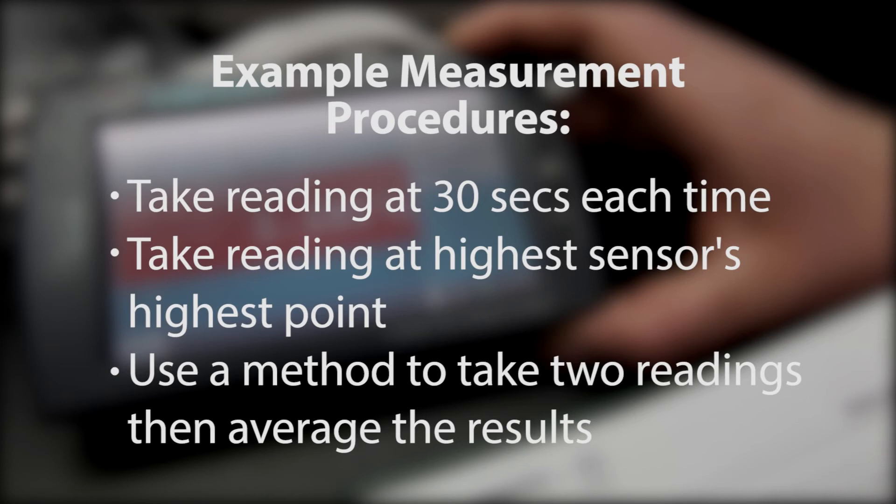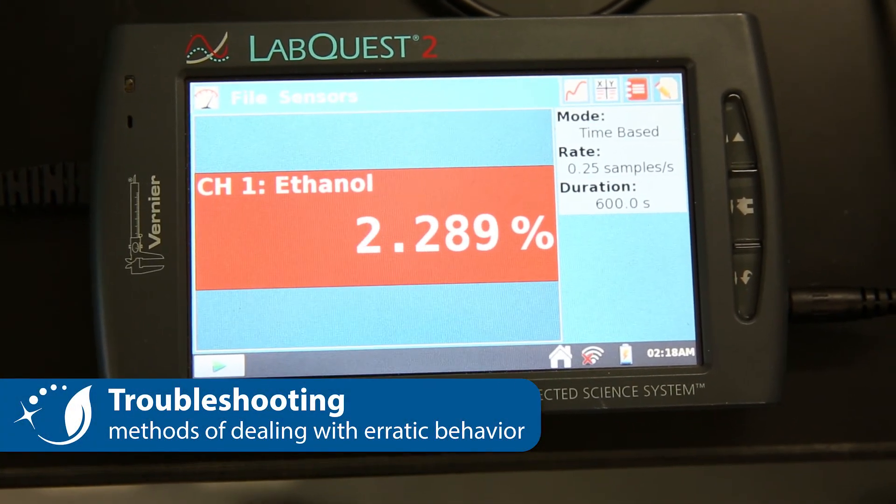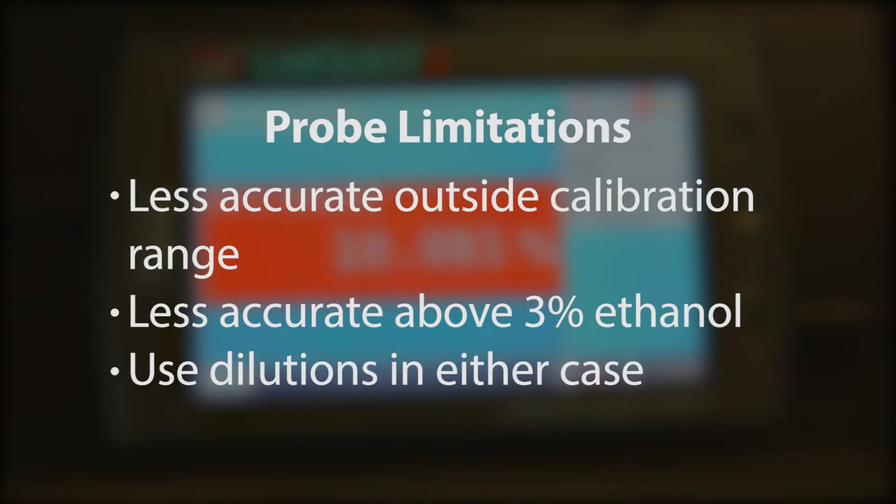If the probe starts producing erratic results, try recalibrating and measuring again. The sensors are only accurate up to three percent. If possible, use dilutions to take more accurate measurements for higher ethanol concentrations.